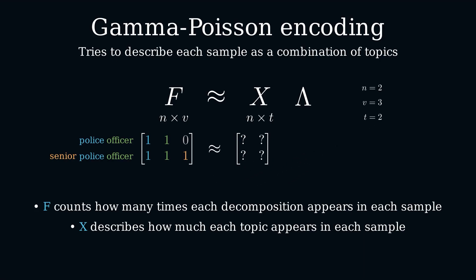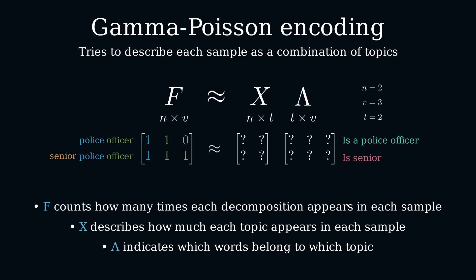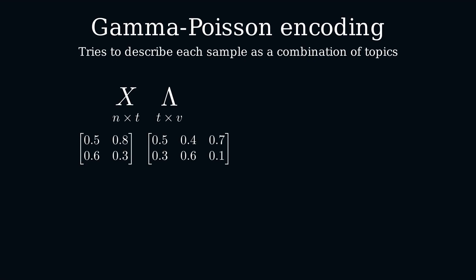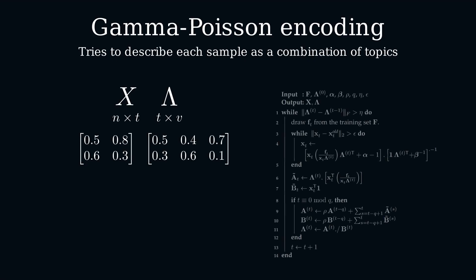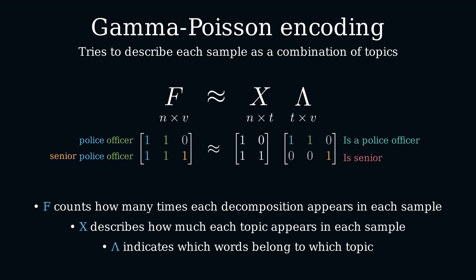Finally, lambda is a matrix of shape t times v. Each coefficient quantifies how much each vocabulary entry belongs to each topic. We know f, the count matrix, but we don't know the values of x and lambda. Therefore, we initialize both with random values and proceed to optimize the result using an algorithm — the takeaway being that by the end of this process, the Gap encoder returns x.